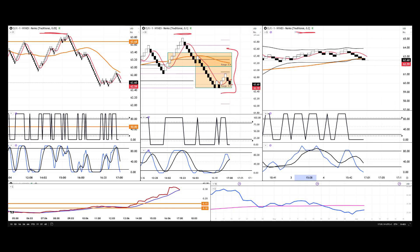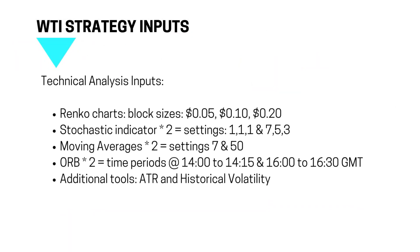To summarize the technical analysis inputs for the WTI crude oil strategy: Renko charts — three of them — with block sizes of 5, 10, and 20 cents. Two stochastic indicators with those settings across all three charts, two moving averages with those settings, and ORB (opening range break) set to specific time periods in GMT UK time. Additionally, ATR (average true range) and historical volatility as supporting tools.